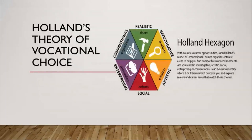This theory holds six personality types. The first is the realistic personality type — these are the doers. Individuals with this personality type enjoy being active and acting out problems; they tend to work with their hands and like to work on machines or with tools. The next personality type is the investigative type — these are the thinkers. These individuals like to think things out before they act, taking a more thoughtful and analytical approach to solving problems.